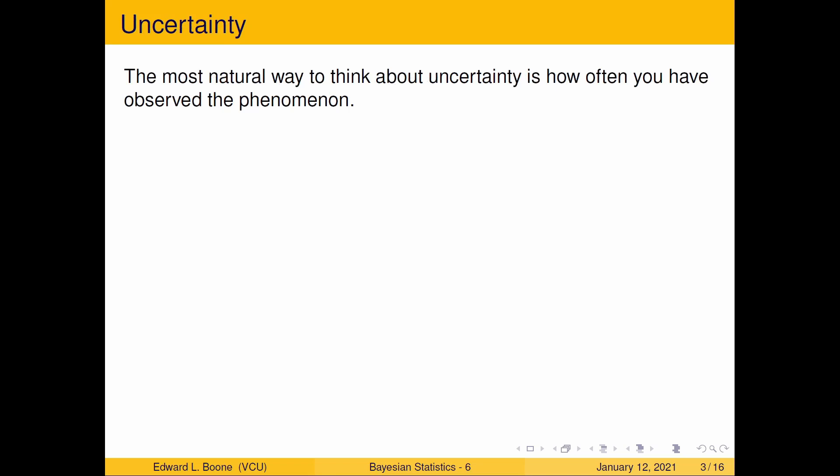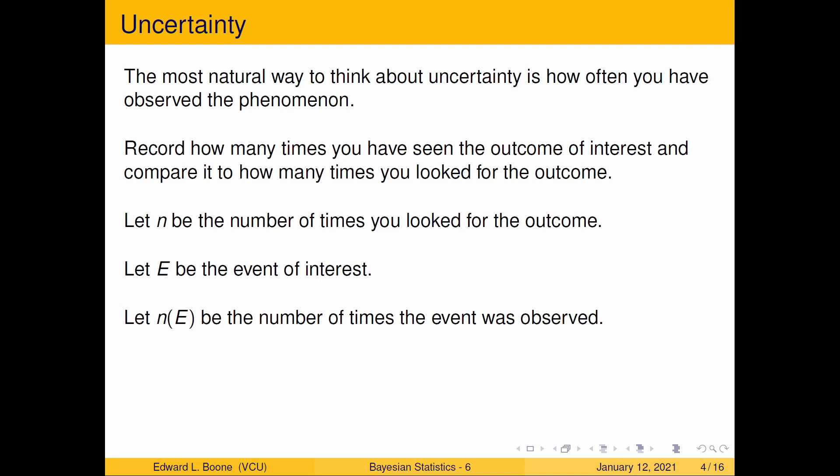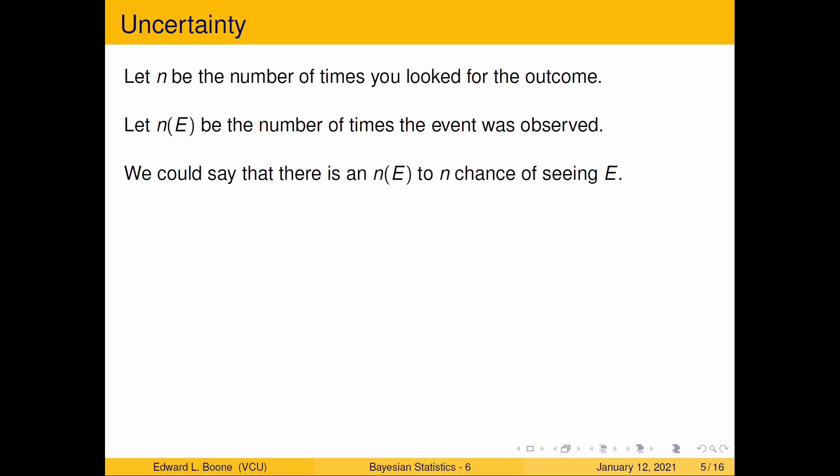The most natural way to think about uncertainty is how often have you observed the phenomenon you're looking for. If you've never seen it, then you're going to be quite uncertain about it. Whereas if it's very common in your life, then you're going to be quite certain about it. So why not just record how many times you observed the outcome that you're interested in and compare it to how many times you looked? Let n be the number of times you looked for that specific outcome. Let E be the event that you're interested in and let n(E) be the number of times that event was observed. You could say that there is an n(E) to n chance of seeing E.